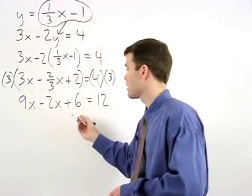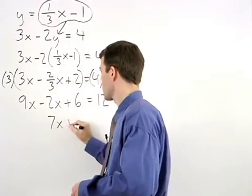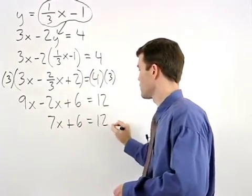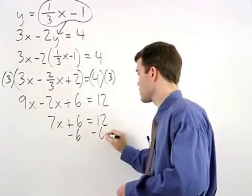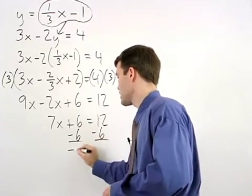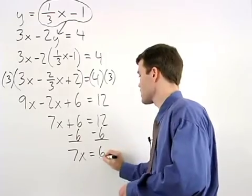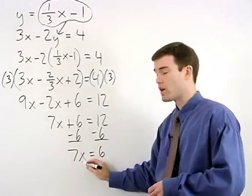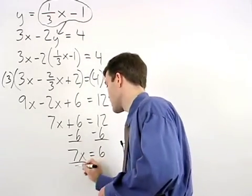Simplifying the left side, we have 7x plus 6 equals 12. Subtract 6 from both sides and 7x equals 6. To solve for x, we divide both sides by 7.